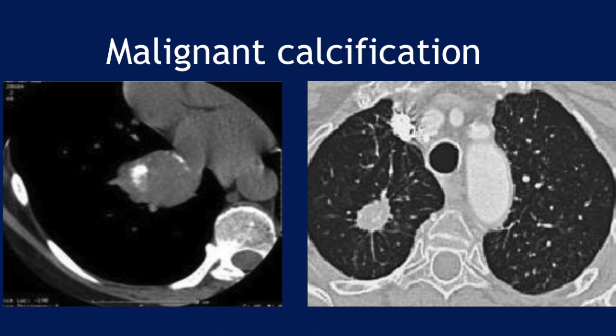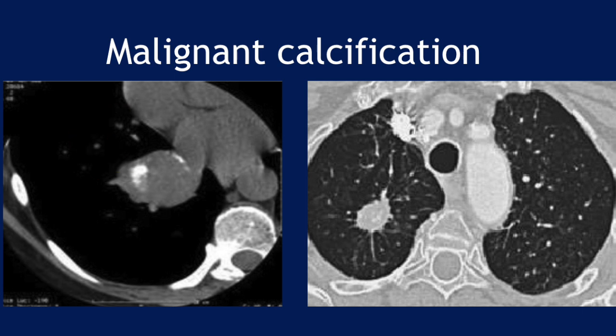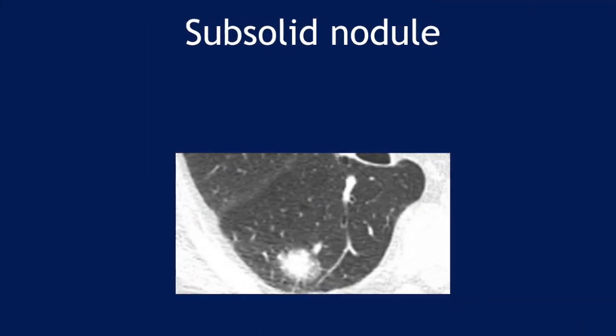We have discussed benign calcification. Now look at malignant calcification: eccentric calcification as seen in adenocarcinoma or carcinoid, and speckled calcification in adenocarcinomas — these are malignant calcifications. Sub-solid nodules — nodules having some ground glass opacities and a solid component — have far more chances of being malignant than solid nodules. We will discuss this in more detail later.